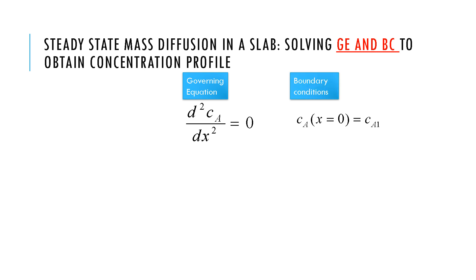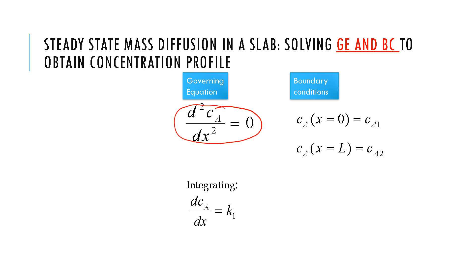Together with the governing equation and boundary conditions, we now have a complete description of the problem from which we can solve for concentration as a function of position and also get flux. The solution process is nearly trivial because it is a very simple equation. Integrating once gives the first constant of integration, and integrating a second time gives the second constant, which we evaluate using the two boundary conditions.